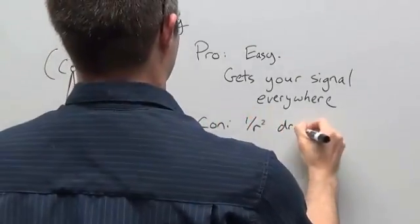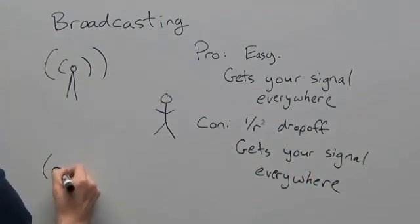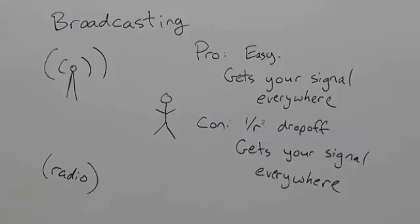The downsides include the fact that your signal strength drops off like 1 over r squared, it requires line of sight, and it bathes everything within a rather large radius in your signal.